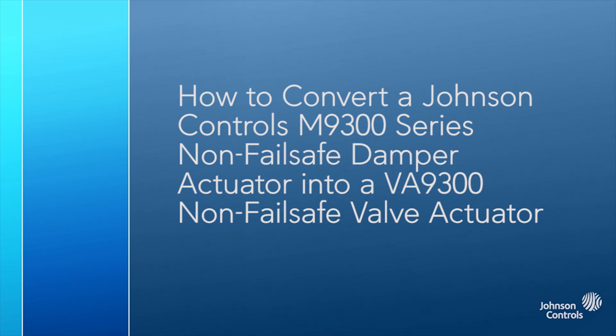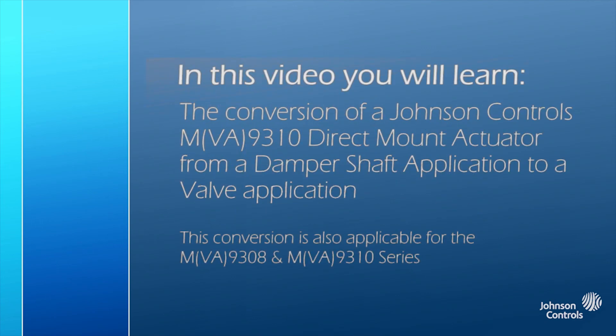In this video we will be demonstrating the conversion of a Johnson Controls M9310 direct mount actuator from a damper shaft application to a valve application.